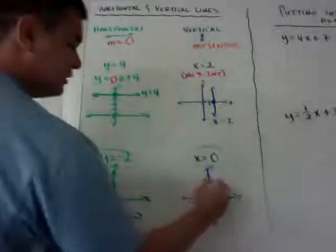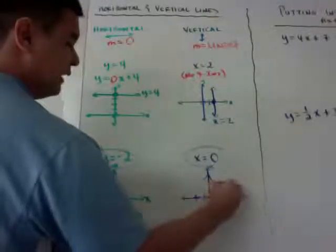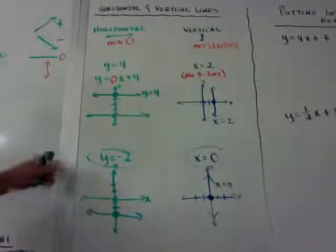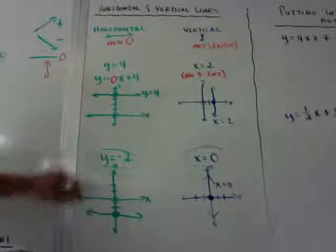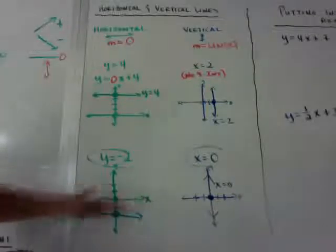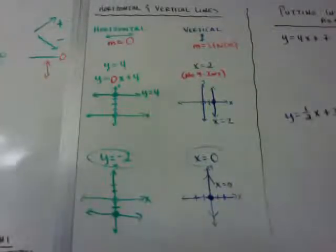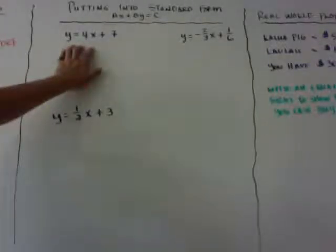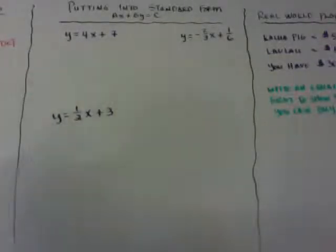So x equals 0 is on the y-axis. Similarly, if y equals 0, it would be on the x-axis. That's horizontal and vertical lines. Here's one of the more challenging parts of this section: putting an equation from slope intercept form into standard form.